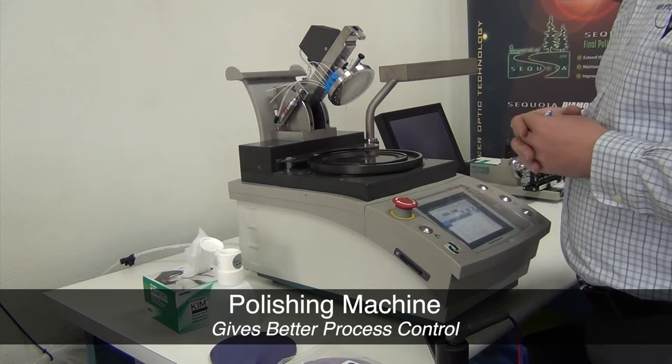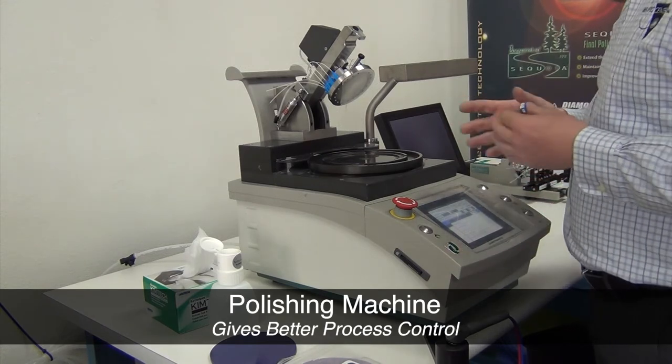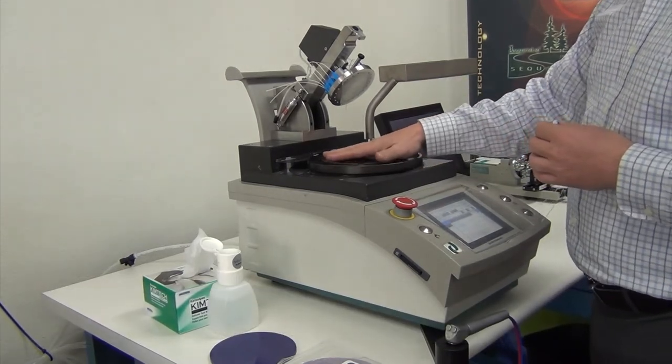After denubbing the fiber, the connectors are ready for polishing. A production environment uses an automated polishing machine for polishing more than 12 or more connectors at a time.